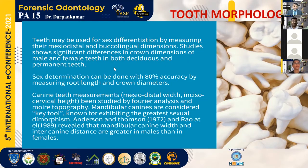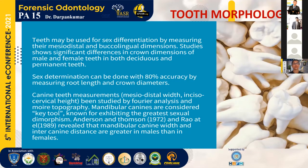In tooth morphology, we can use teeth dimensions like mesiodistal dimension and buccolingual dimension, which are significantly different in male and female patients, in both deciduous and permanent teeth. Crown width, crown dimensions, and root length can give almost 80% accuracy for sex determination. Mandibular canines are mainly used as a key tool for sex determination.